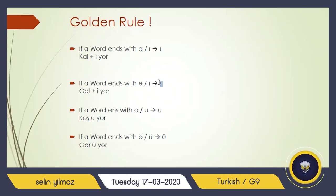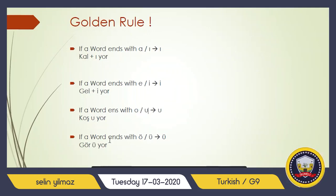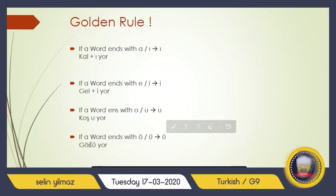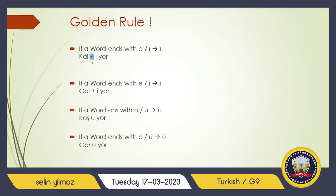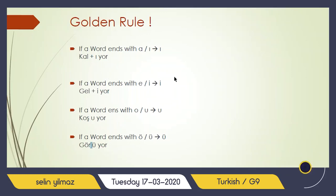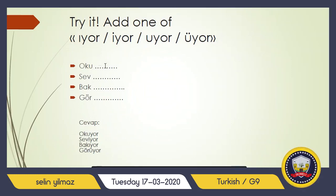Ends with 'e' or 'i,' you follow 'i' — like gel, geliyor. So if you are ready, try this page: add one of these — ıyor, iyor, uyor, üyor. There are answers on the page but do not look at them — try it yourself first.